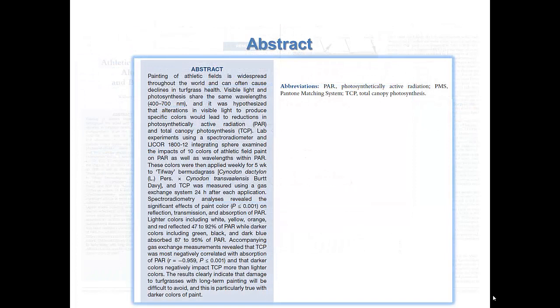Our first step is to read the abstract. This is a summary of the article. As you are reading, highlight any unfamiliar words or phrases to look up later. In many papers, you will also find abbreviations used in the text. This list will appear after the abstract. In this paper, PAR is short for Photosynthetically Active Radiation and TCP is short for Total Canopy Photosynthesis. In the abstract, we find that they looked at specific colors of paint and their effect on photosynthetically active radiation and on canopy photosynthesis. Based on the abstract, this article would be of help in answering the research question.